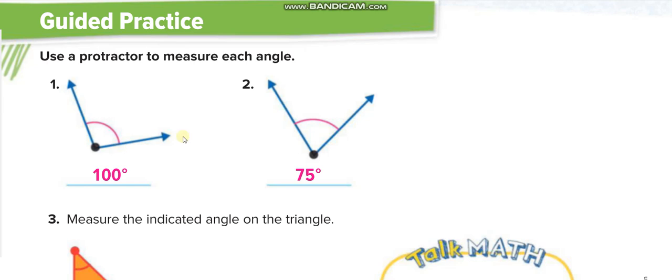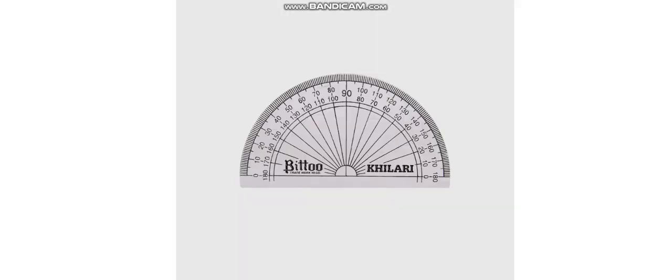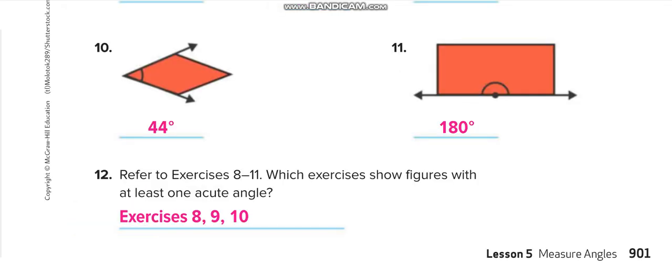This next one is easy — put the protractor and it reads 100 degrees. For the following one, place the protractor with zero on this line and it reads 75 degrees. For the last one in this set, you have to tilt the protractor — move it like this, place the endpoint here on zero, and check that this is 45 degrees.